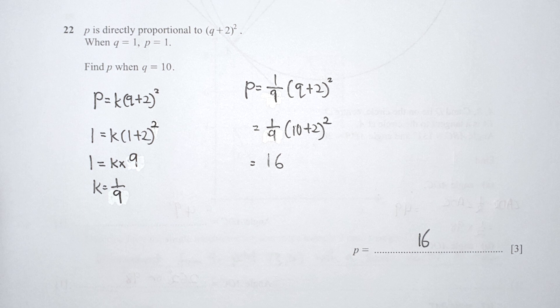For question 22, they refer to direct proportion. The formula I constructed is p equals k times (q plus 2) squared, where k is the scale factor. Substituting p equals 1 and q equals 1, you get 9k equals 1, so k equals 1 over 9. Then substituting q equals 10, the final result for p is 16.